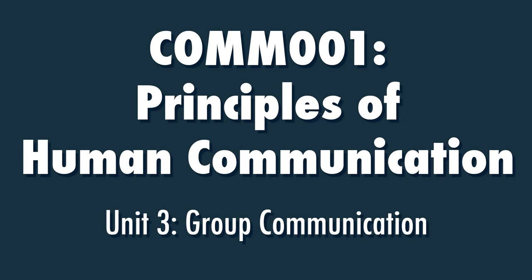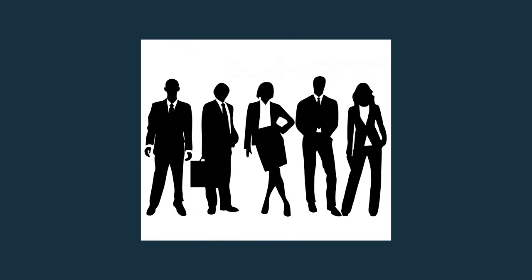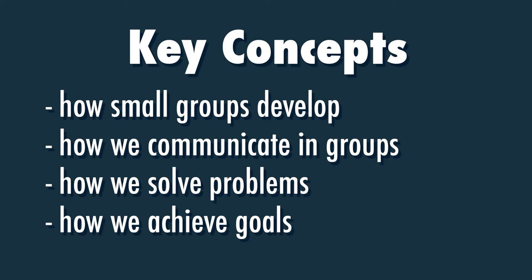In Unit 3, we're going to build upon what we've learned in Units 1 and 2 about human communication and interpersonal communication to apply it to communication in small groups. Because we spend the majority of our lives working and socializing in small groups, it's important for us to examine these relationships more closely. Some of the key concepts to watch out for in Unit 3 are how small groups develop and how we communicate in groups as we strive to solve problems and achieve group goals.